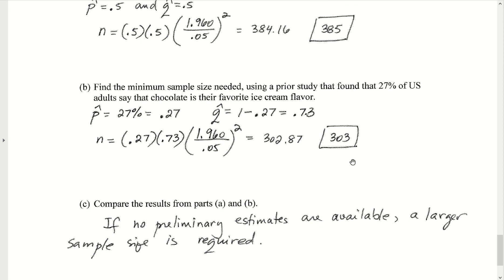So with the preliminary information, we would need a sample size of 303 individuals to create a 95% confidence interval.